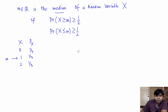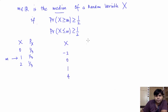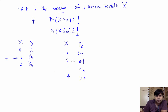Let's consider another example. Suppose x takes four values: minus two, zero, one, and four, and the associated probability mass function is 0.4, 0.1, 0.3, and 0.2.